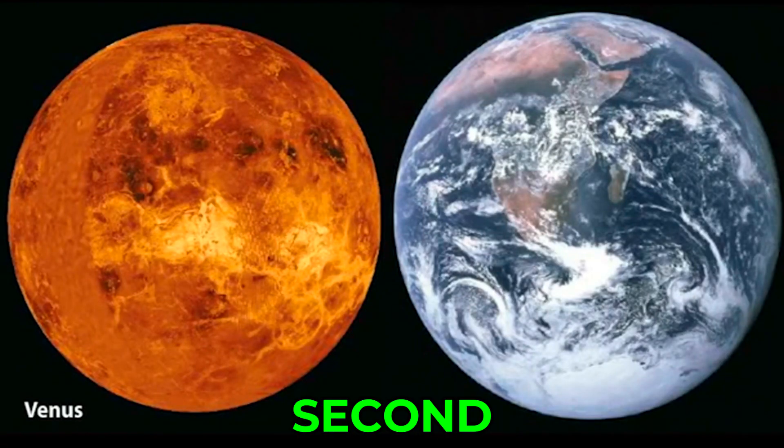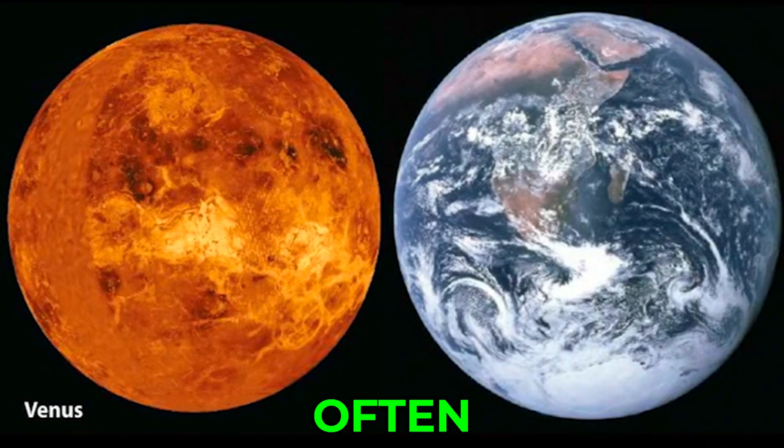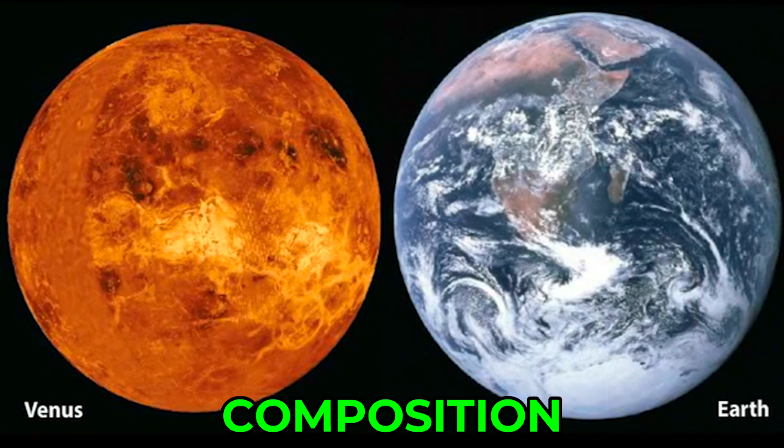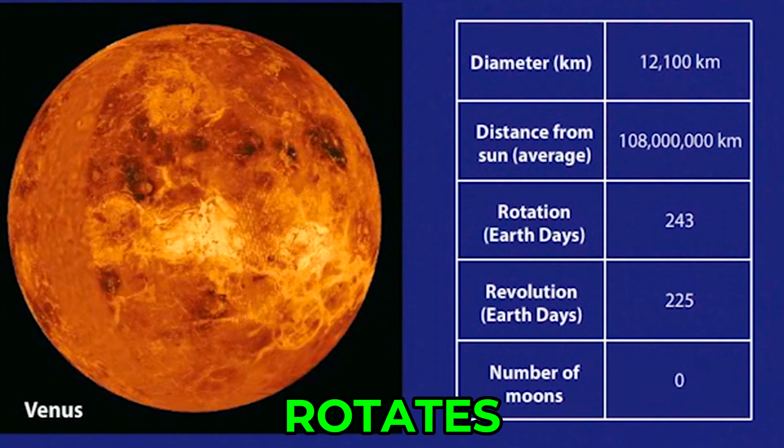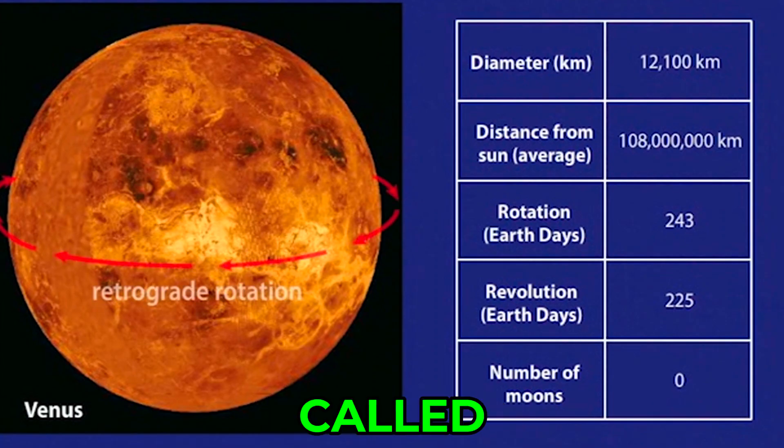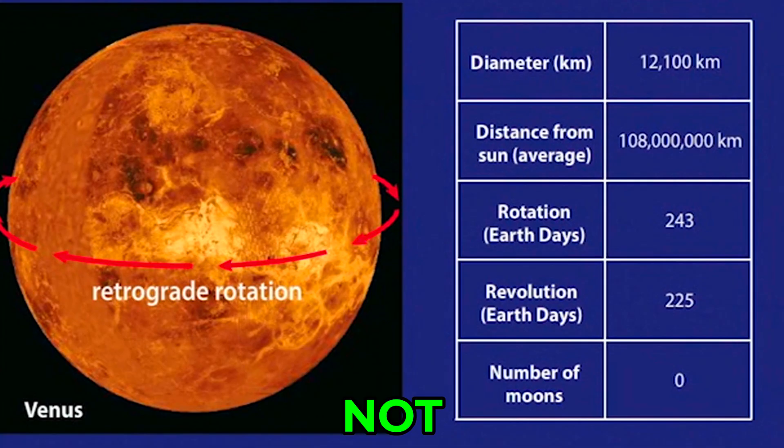Venus is the second closest planet to the Sun. It is often called Earth's sister or twin planet due to similar composition, gravity, and size. Venus rotates very slowly in a clockwise direction called retrograde rotation. Similar to the planet Mercury, Venus does not have any moons.